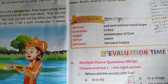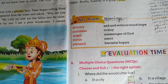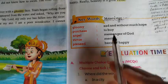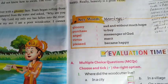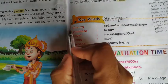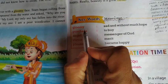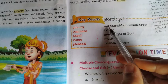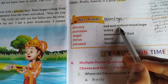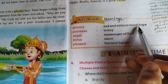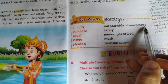We are going with textual exercises. First, coming with meanings. Gloomy — what is the meaning of gloomy? Sad and without much hope.